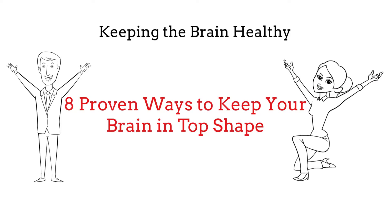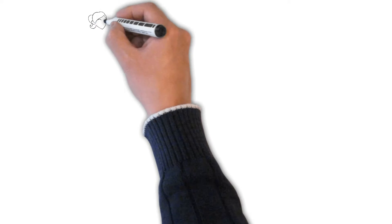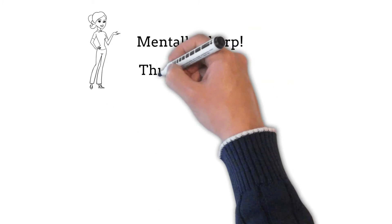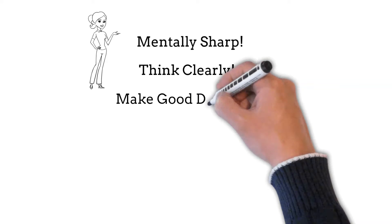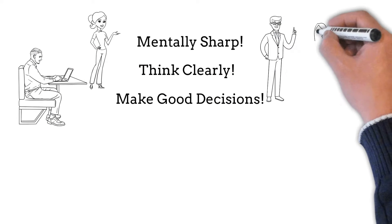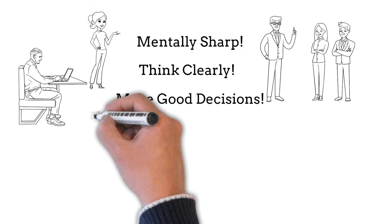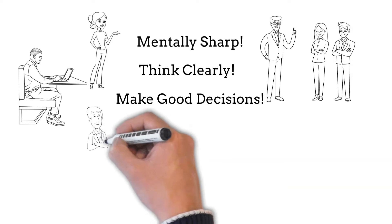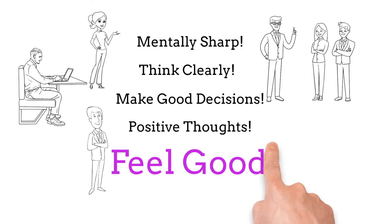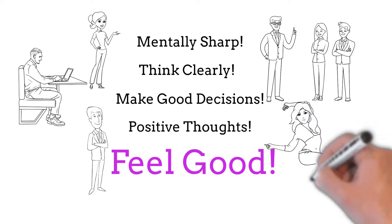A healthy brain is important for many reasons. One reason is that a healthy brain helps us stay mentally sharp. We need our brains to think clearly and make good decisions. Another reason is that a healthy brain helps us stay physically active. We need our brains to tell our muscles what to do so we can stay active and healthy. A third reason is that a healthy brain helps us feel good about ourselves. We need our brains to give us positive thoughts and feelings so we can be happy and enjoy life.